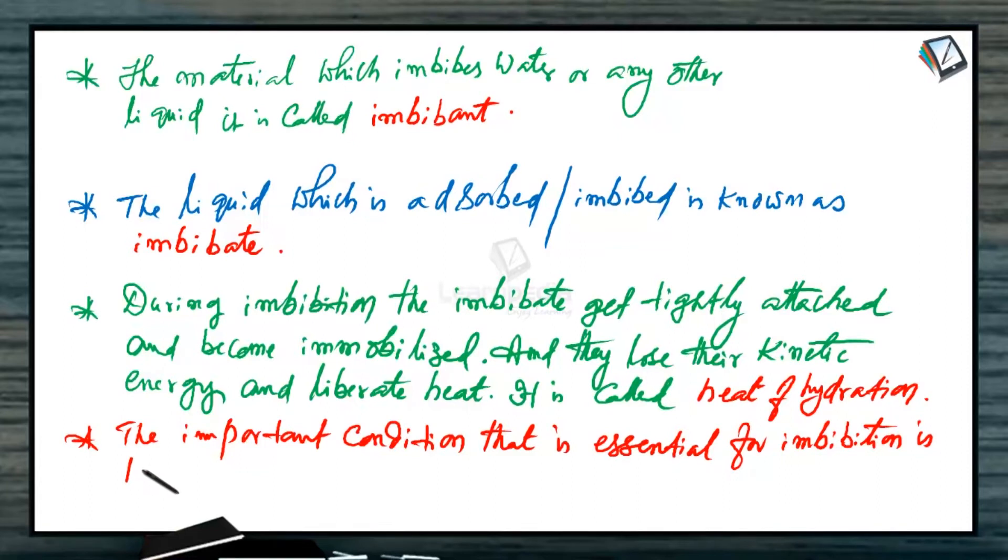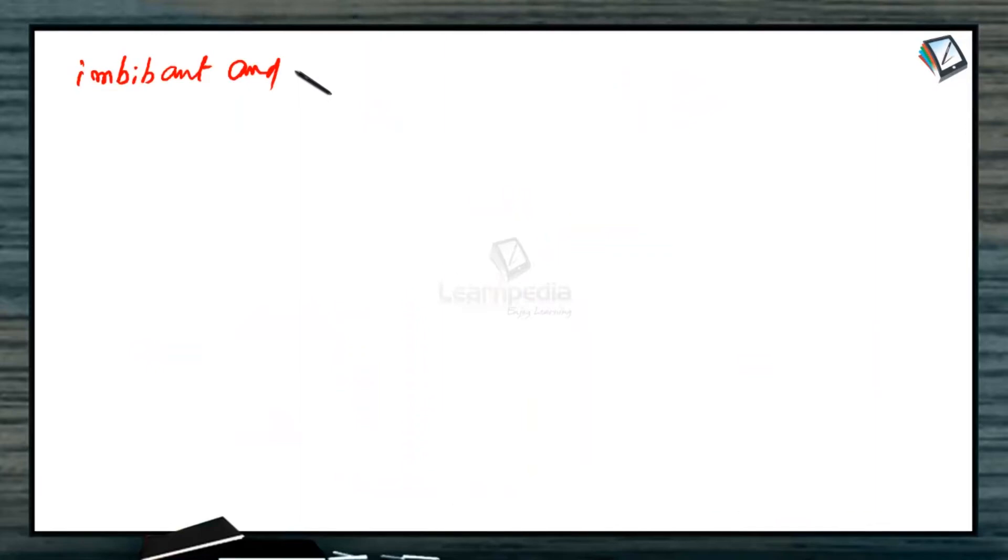The important condition that is essential for imbibition is there must be some force of attraction between the imbibent and the imbibate. Colloids, wood, and gels are very good imbibents.